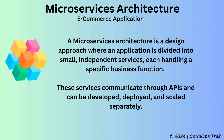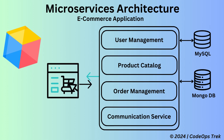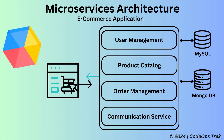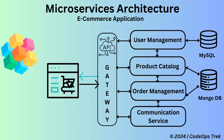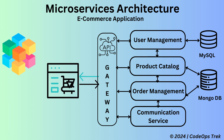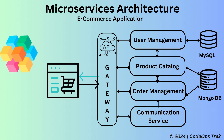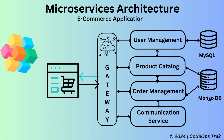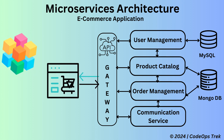Let's see how we can change our e-commerce application from monolithic to microservices architecture. This is the original e-commerce monolithic architecture. After converting to a microservices architecture, the e-commerce application will transform significantly. In the microservices model, each component — such as user management, communication, product catalog, and order management — is developed as a separate, self-contained microservice. These microservices operate independently and communicate with each other through APIs.